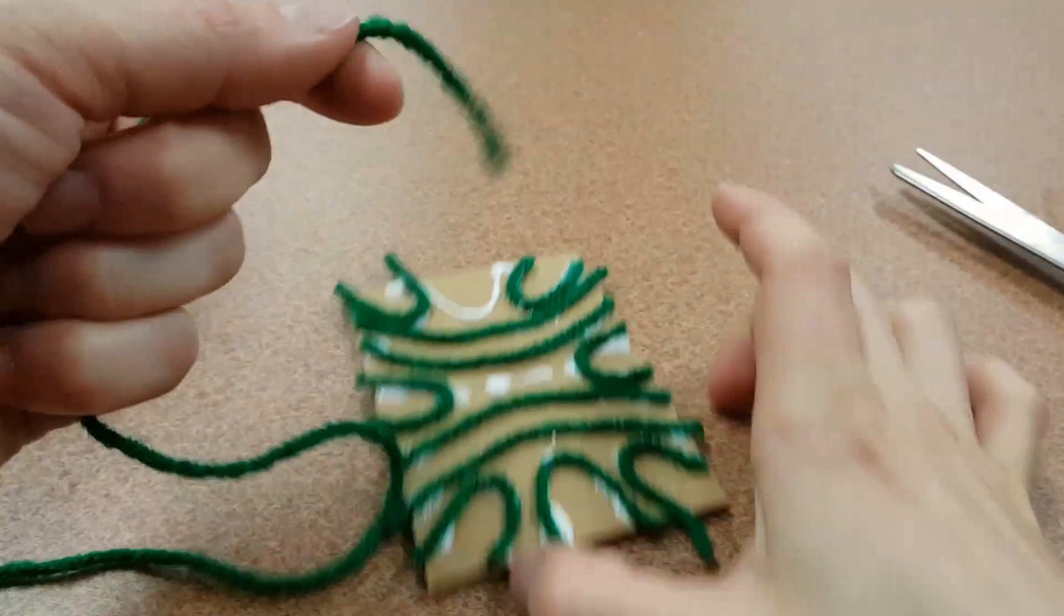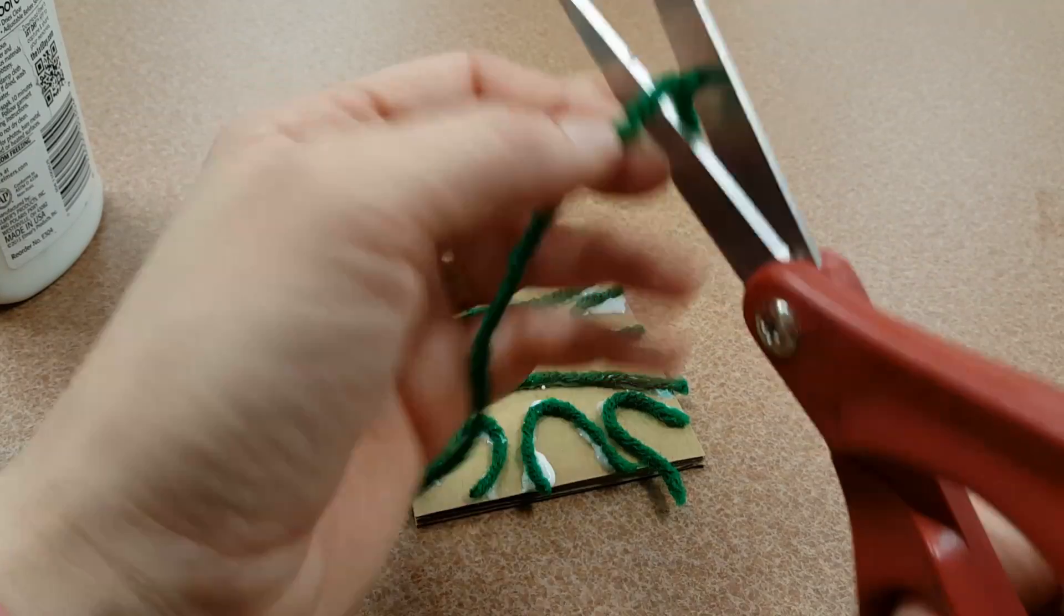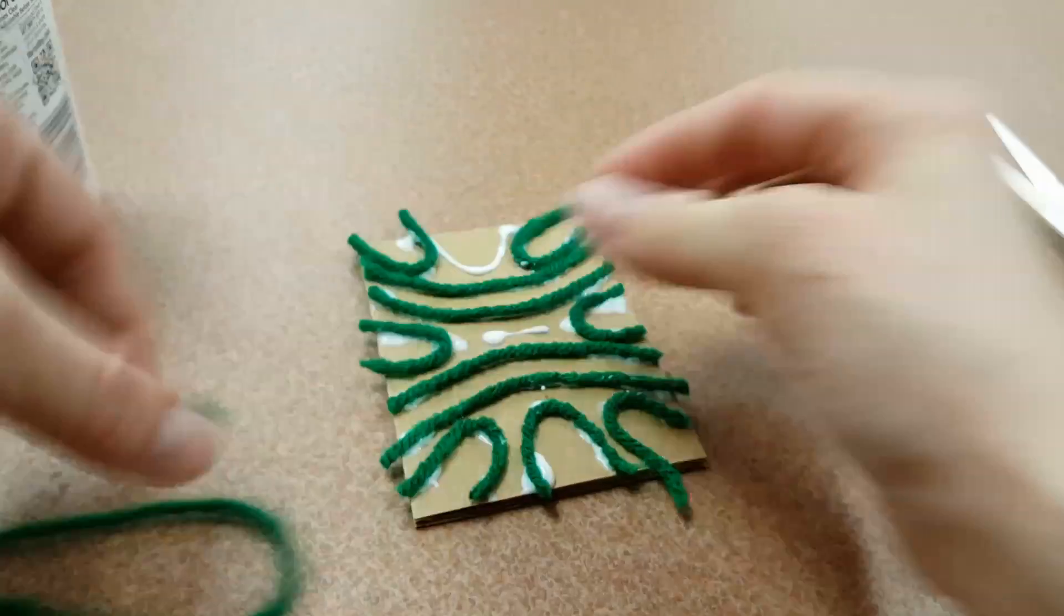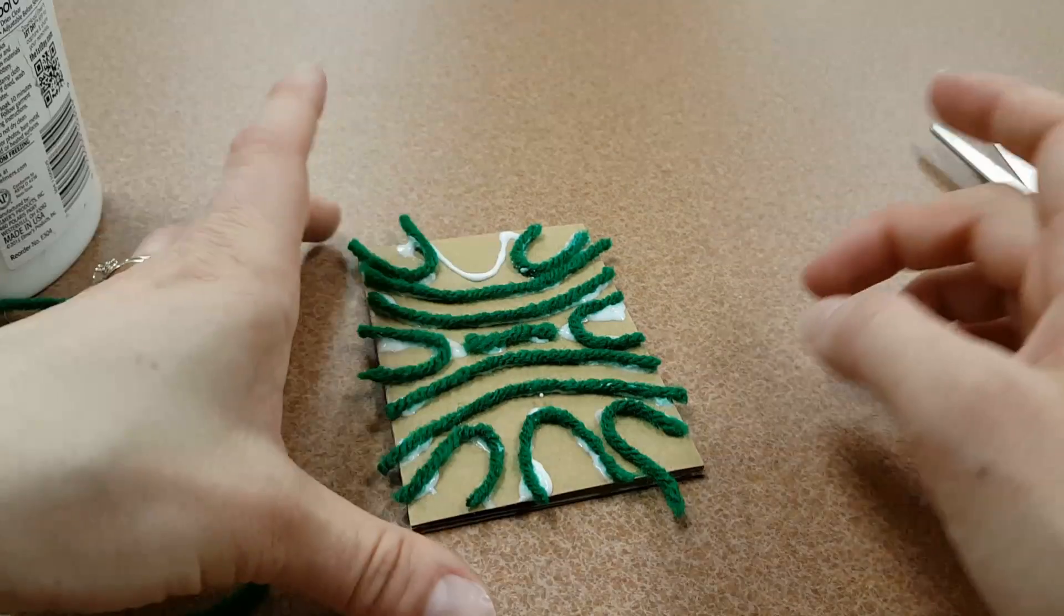You could always cut the yarn first, just kind of measure how long you think it should be, cut it, and then stick it on. As I mentioned, some of it can hang over the edge because we can trim that later.